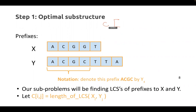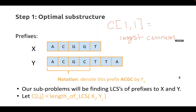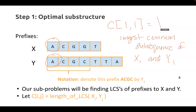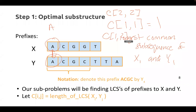So C(1,1) answers: what is the longest common subsequence of X_1 and Y_1? X_1 is just the letter A and Y_1 is just the letter A, so the answer is one — the longest common subsequence between these two is just A, which has length one. You also have C(2,2), C(1,2), and all these other subproblems. What we're going to do is slowly build them up, because we can solve bigger problems like C(2,2) if we know the answer to C(1,1), C(1,2), etc.